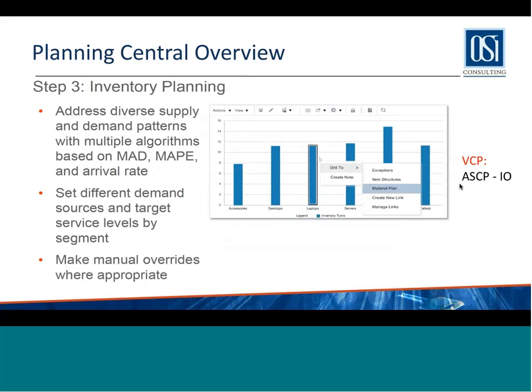After demand planning is inventory planning. This looks at forecast accuracy measures and customer service levels to come up with target inventory at the finished goods level — and if needed, the component level as well. It helps calculate safety stock and allows manual overrides. This inventory planning module is equivalent to the inventory optimization module in ASCP. Inventory optimization did a little more, but for most intents and purposes this does a good job of using statistical calculations on safety stock.